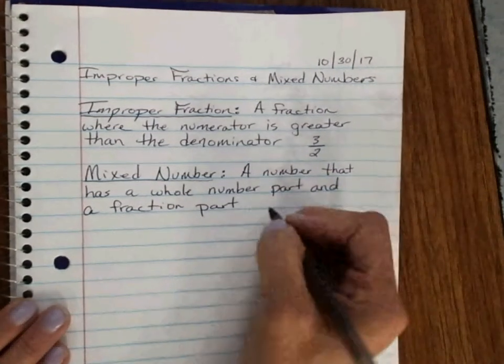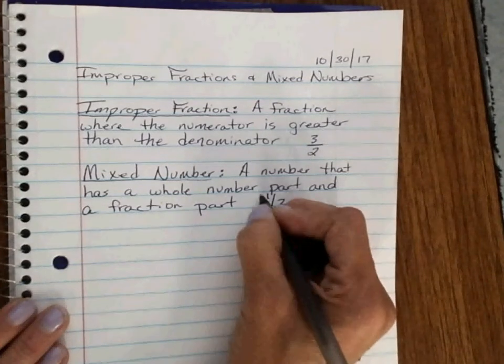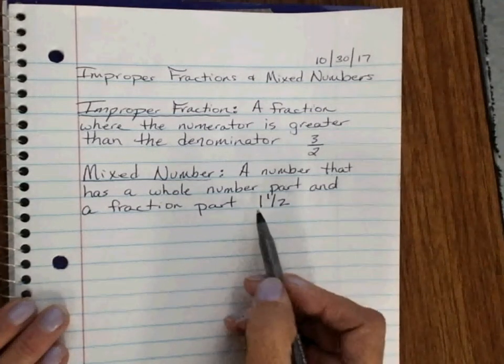So for example, 1 and 1 half. That is a mixed number. It has a whole number and a fractional part.